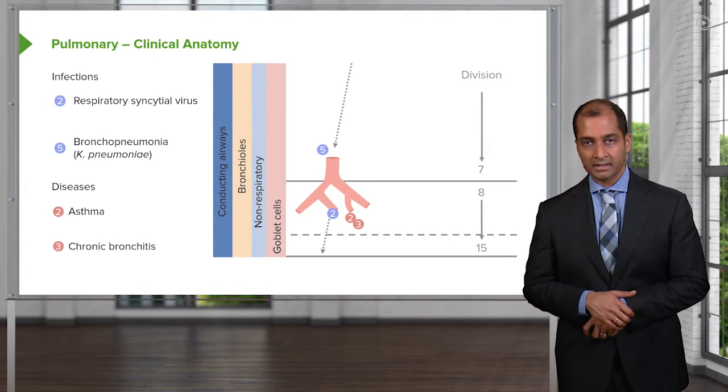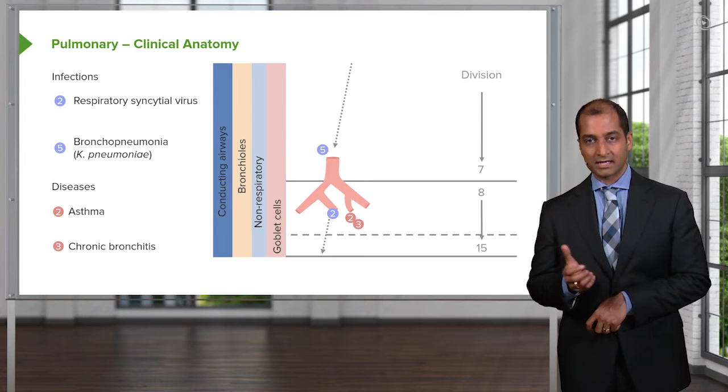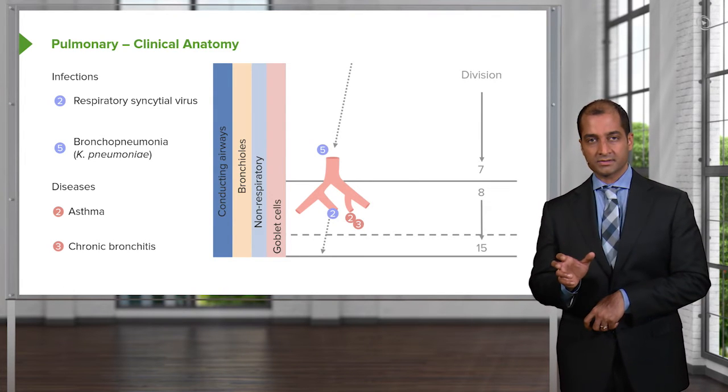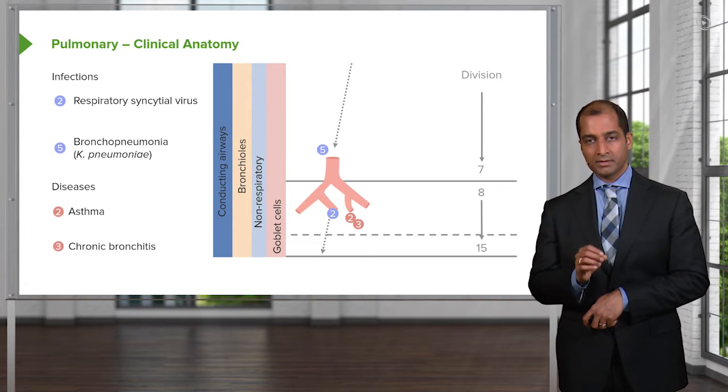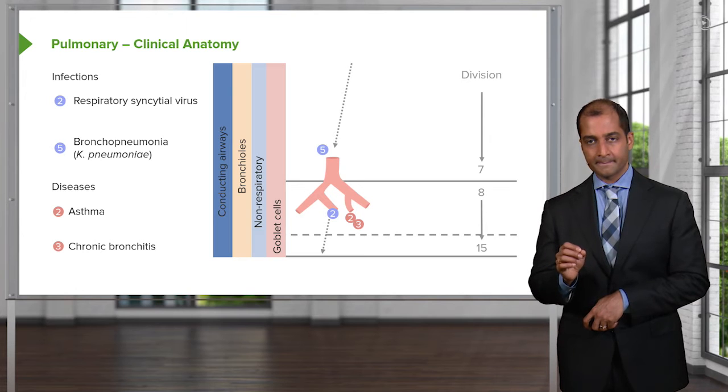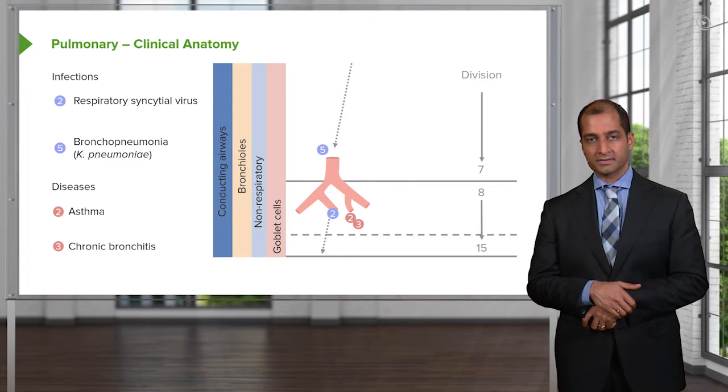Here we have bronchioles, and once again, we'll find these to be the conducting airways. Let's take a look at the infections here again. Number two represents the most common cause of pneumonia in children, virally. This is respiratory syncytial virus, a child.